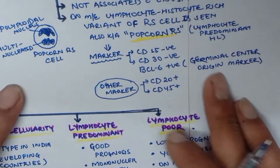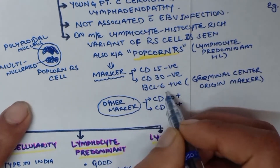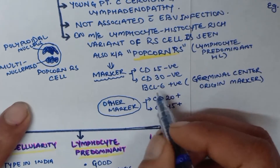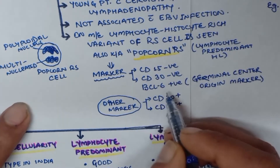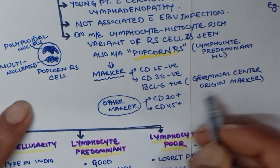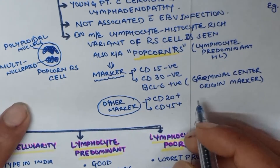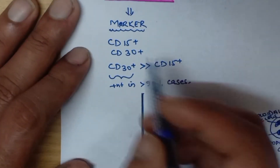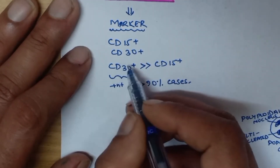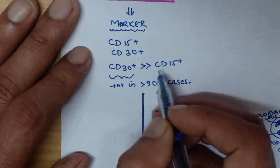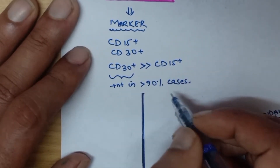In non-classical Hodgkin's lymphoma, CD15 and CD30 are negative, while BCL6 is positive — BCL6 being a germinal center origin marker. CD20 and CD45 are also expressed. In classical Hodgkin's lymphoma, CD15 and CD30 are both positive, with CD30 seen in more than 90% of cases and being more common than CD15.